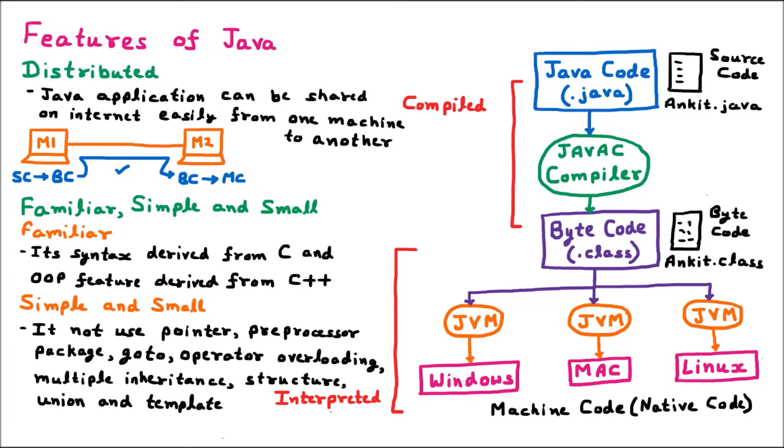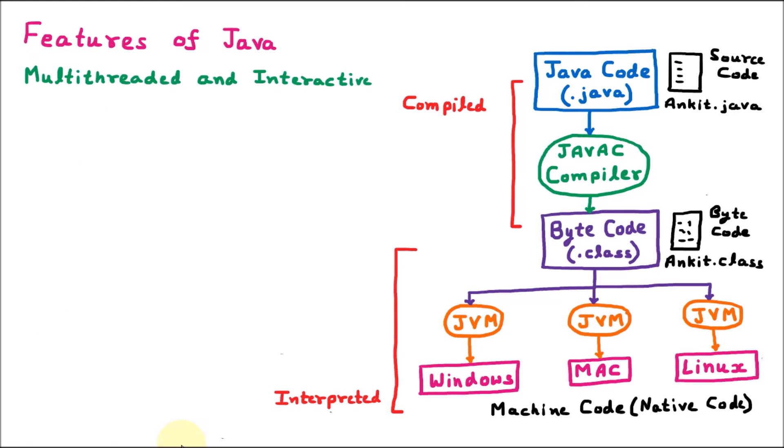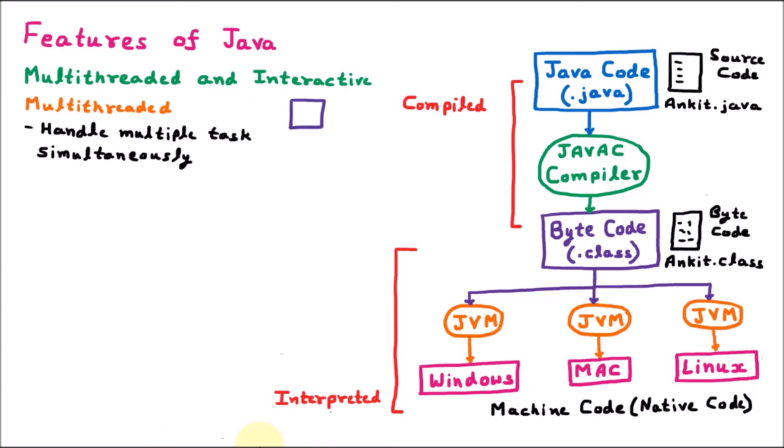The next feature of Java is that it is multi-threaded and interactive. Java is multi-threaded because it can handle multiple tasks at the same time. A process can have multiple threads. For example, Google Chrome is a process, and its tabs are threads. So Java is multi-threaded — it can perform similar tasks simultaneously. That is multi-threading.